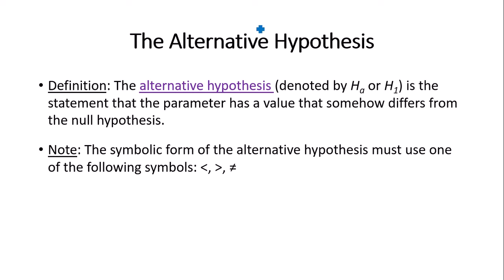The alternative hypothesis, denoted by Hₐ or H₁, is the statement that the parameter has a value that is different from the null hypothesis. Equality does not go with the alternative hypothesis. The symbolic form of the alternative hypothesis must be less than, greater than, or not equal to — it can only be one of these three symbols.